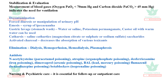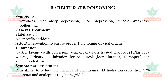The first thing is nursing and psychiatric care. Now, barbiturate poisoning — this is a sedative hypnotic. That is why you see drowsiness, respiratory depression, CNS depression, muscle weakness, and temperature changes. General treatment is stabilization; there is no specific antidote. ABCD intervention.